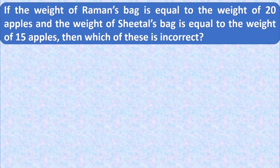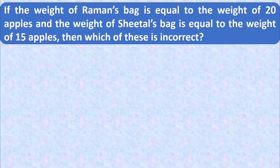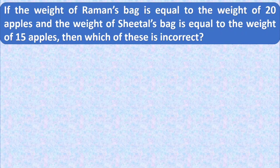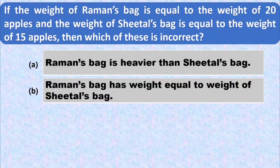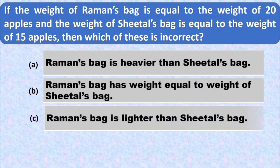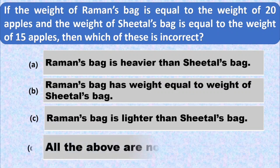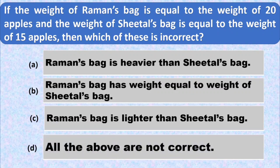Here is the second question. If the weight of Raman's bag is equal to the weight of 20 apples and the weight of Sheetal's bag is equal to the weight of 15 apples, then which of these is incorrect? Option A is Raman's bag is heavier than Sheetal's bag. Option B is Raman's bag has weight equal to the weight of Sheetal's bag. Option C is Raman's bag is lighter than Sheetal's bag. And option D is all the above are not correct.